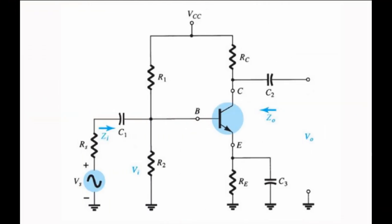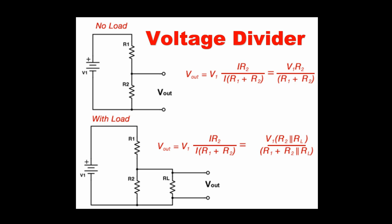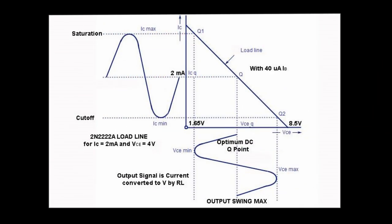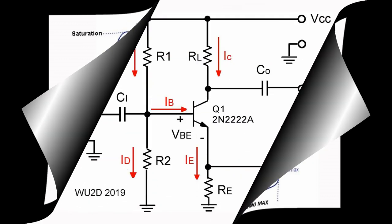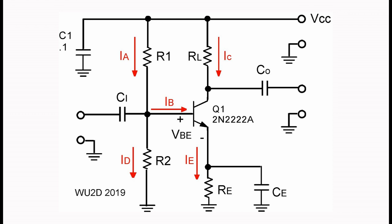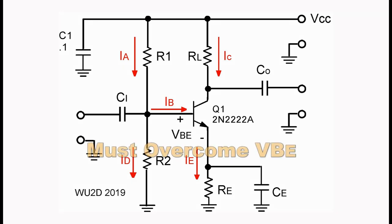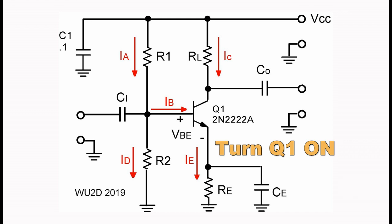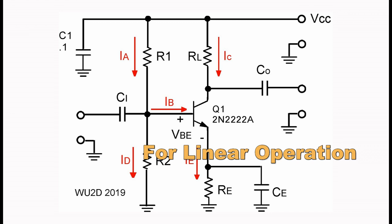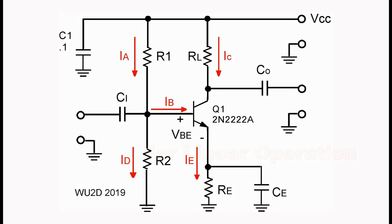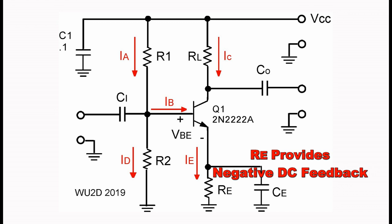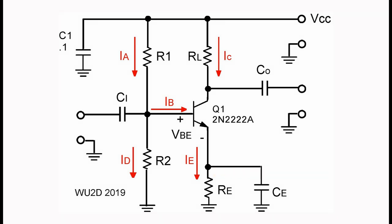Next, we want to set up the DC biasing so that the 2N2222 is operating in the linear region as a class A amplifier. The so-called H or voltage divider biasing is a very robust method to set what's called the Q point. The advantage of using a voltage divider lies in its stability. Since the voltage divider formed by R1 and R2 is lightly loaded, the base voltage VB can be easily calculated using a simple voltage divider formula. The addition of an emitter resistance helps control the transistor's base bias by introducing negative feedback, which negates any attempted changes in the collector current with an opposing change in the base bias voltage, so the circuit tends to be stabilized at a fixed level.